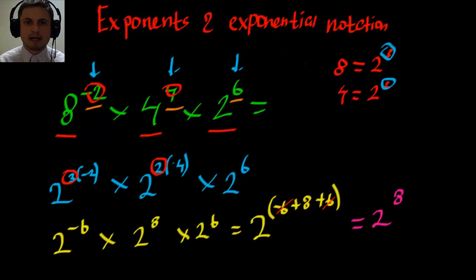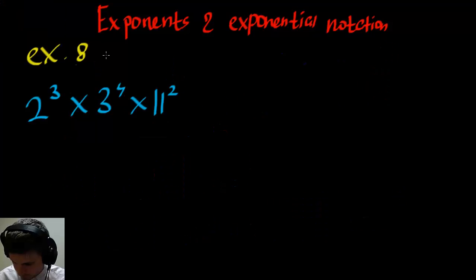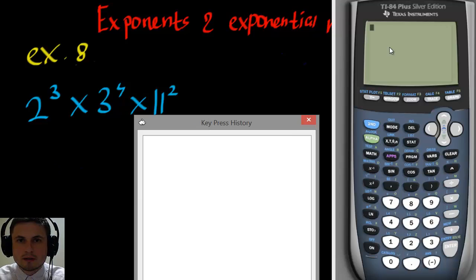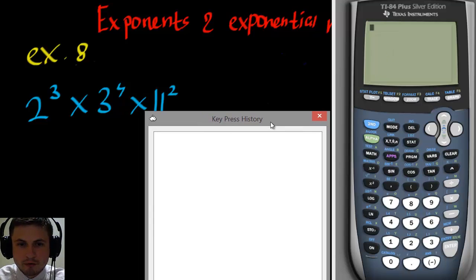All right, let's talk about how to do this on a calculator. So let's take a look at example eight from page 25 in chapter one. Basically, you have two cubed times three to the power of four times 11 squared. So here, we have to try to use a calculator to find a natural number, essentially, a number. Let's take a look at TI 84 plus silver edition. So this is my simulated TI 84.